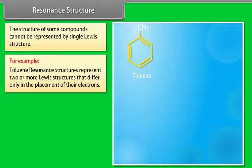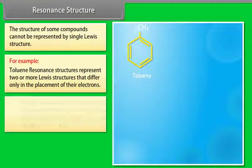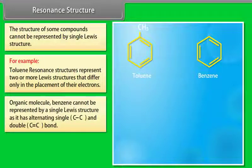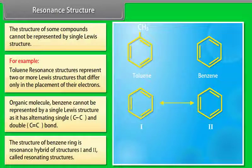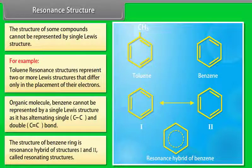Resonance structure — the structure of some compounds cannot be represented by a single Lewis structure. Resonance structures represent two or more Lewis structures that differ only in the placement of their electrons. The organic molecule benzene cannot be represented by a single Lewis structure as it has alternating single and double bonds. The structure of the benzene ring is a resonance hybrid of two resonating structures.